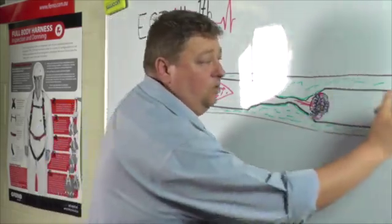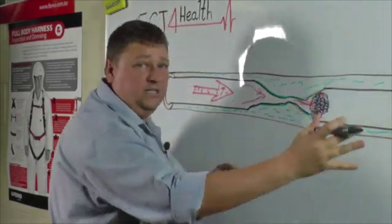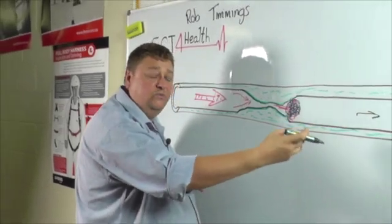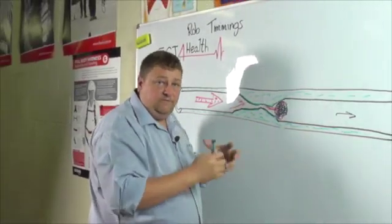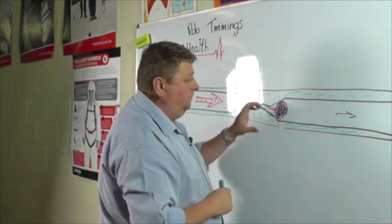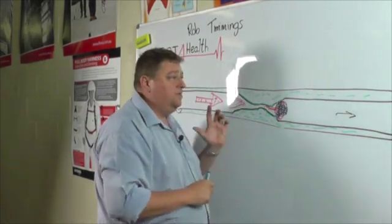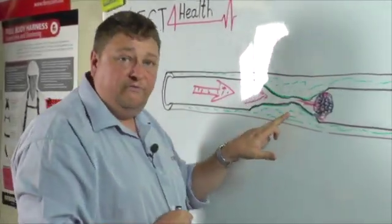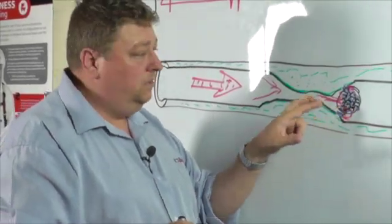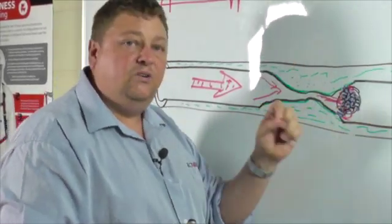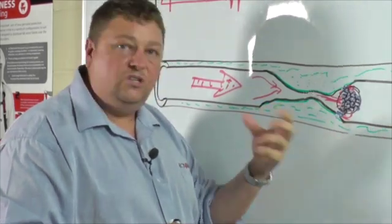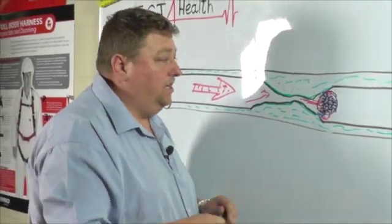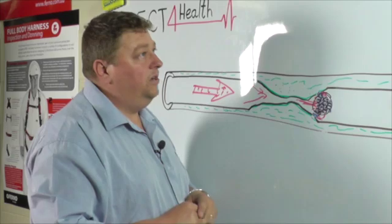Now, a piece of this clot could break off and be liberated into circulation and get stuck further downstream, therefore causing a complete blockage in a smaller vessel, which then causes death of that cardiac tissue. That process is the physiology that underpins a myocardial infarction. It isn't a blockage from fat. It's a blockage from a clot. But the clot was initiated because that delicate brittle wall was fractured and damaged as a result of turbulent blood flow that initiated that clotting cascade. Myocardial infarction.